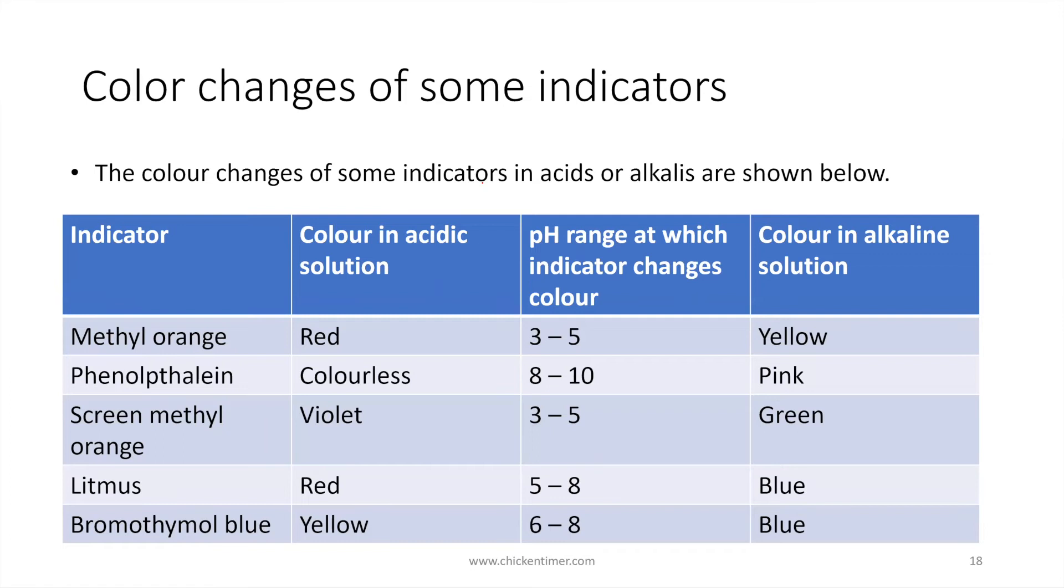We have some other indicators that we use, which is like methyl orange, phenolphthalein, screen methyl orange. There are a few here. We usually often use this, sometimes with phenolphthalein. The chart is like this: in acidic solution it will be this color, and in alkaline solution it will be this color. The methyl orange will be red color in acid and yellow color in alkaline solution.